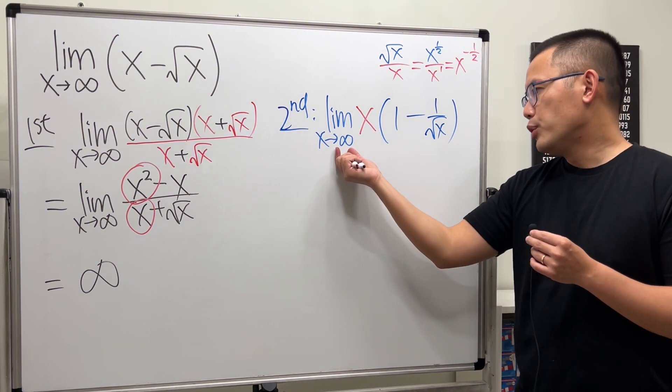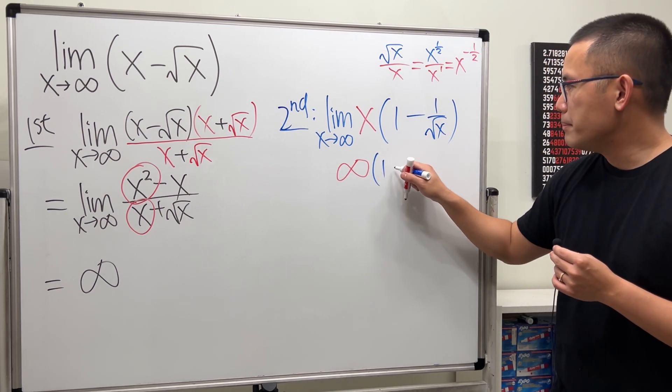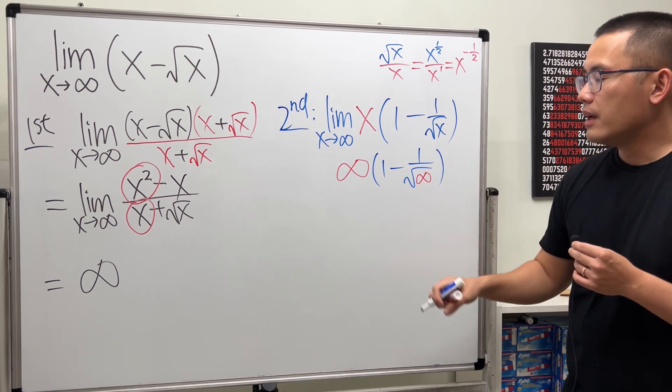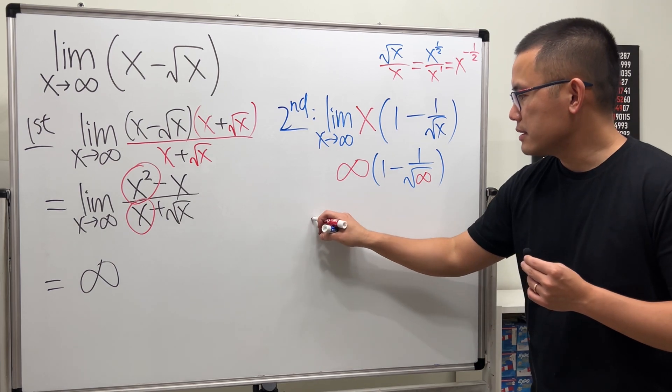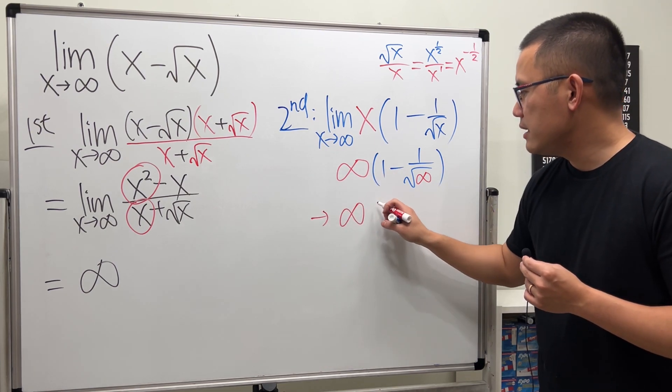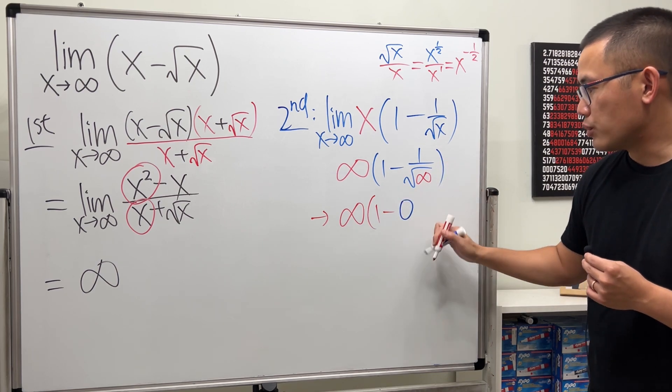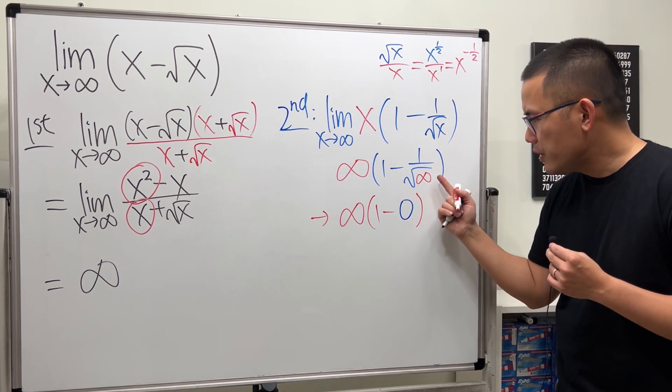Now if you put infinity into all the x's then it looks like we have infinity times one minus one over square root of infinity. Can we draw conclusions? Yes, because now we're looking at infinity times one minus this which gives us zero, because square root of infinity is infinity and one over infinity is zero.